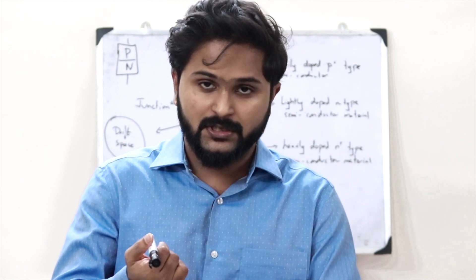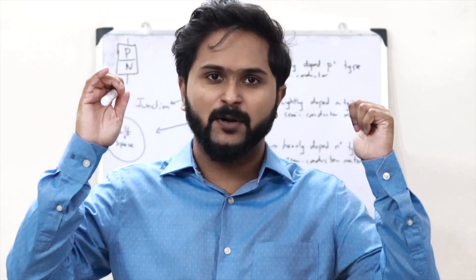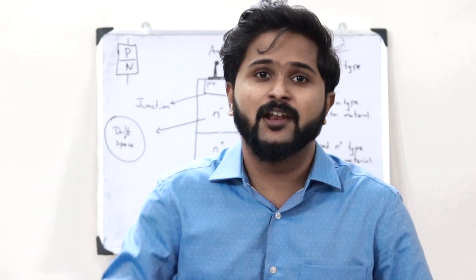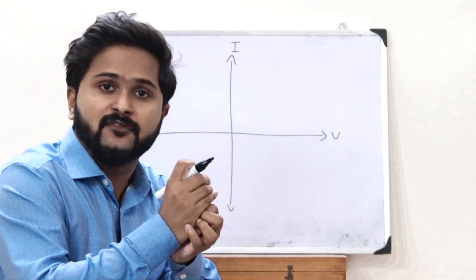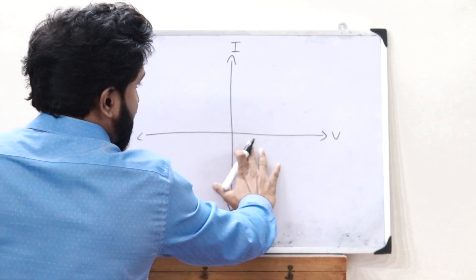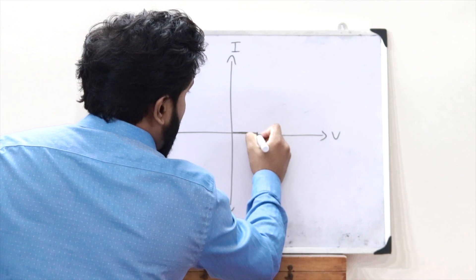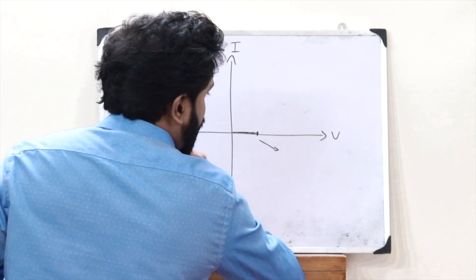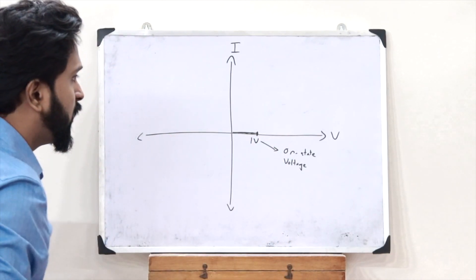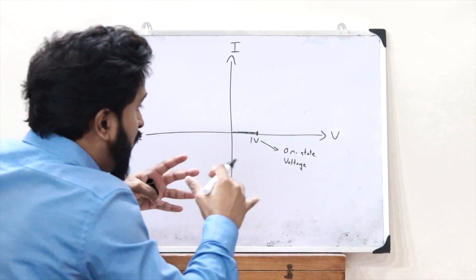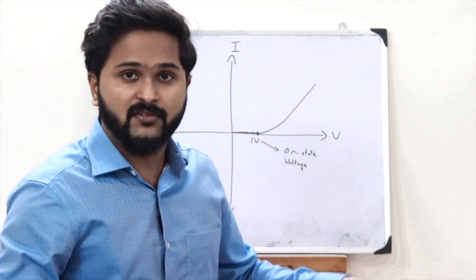So I mentioned a few things here — reverse biased breakdown voltage, on-state voltage. To understand those, we have to draw the IV characteristics of this particular power diode. In the forward biased condition — that is when the anode is connected to the positive terminal of the battery and the cathode to the negative terminal — as the voltage increases the characteristic stays flat up to a particular value, which we refer to as on-state voltage. In the case of power diodes, the on-state voltage is approximately equal to one volt. After the on-state voltage, when the voltage is further increased, we see the IV characteristic curve rise — this is the forward bias characteristic of a power diode.